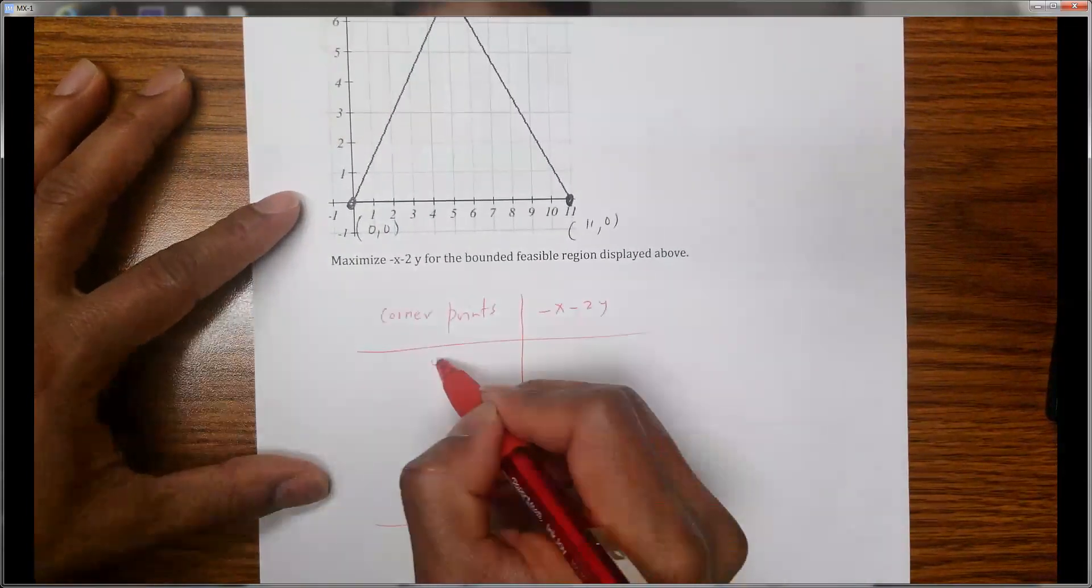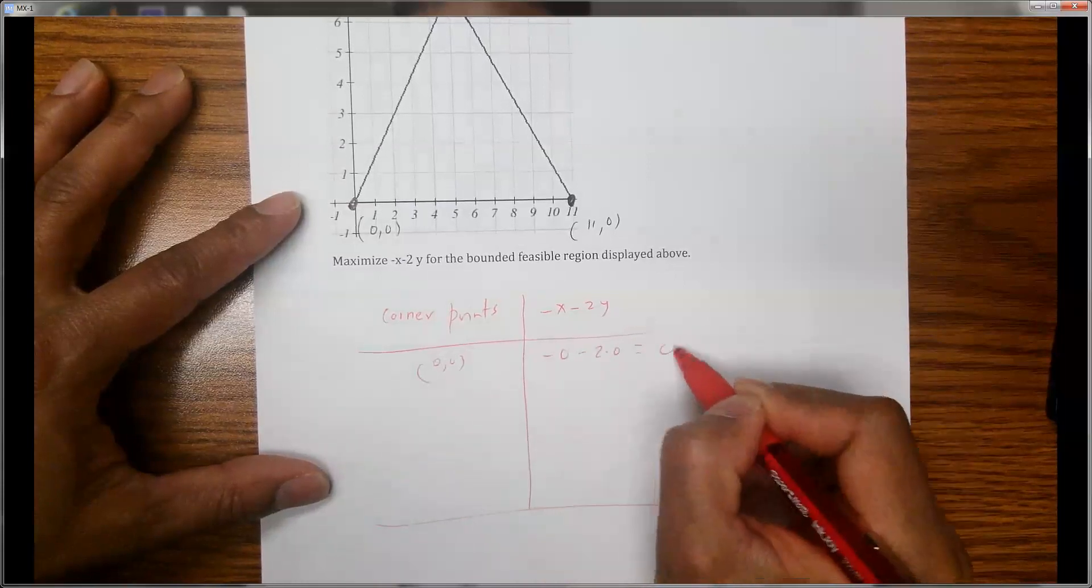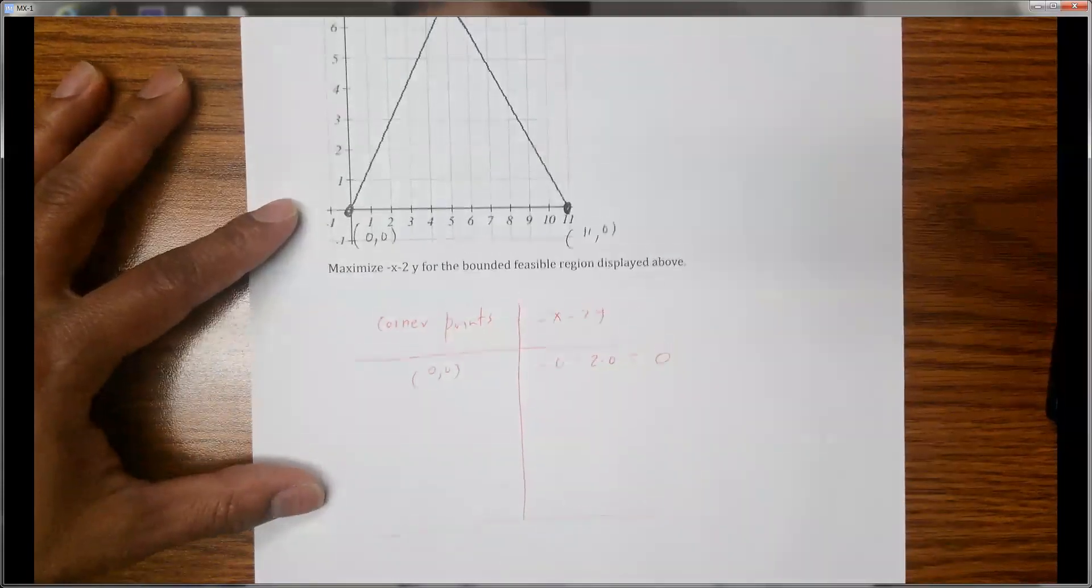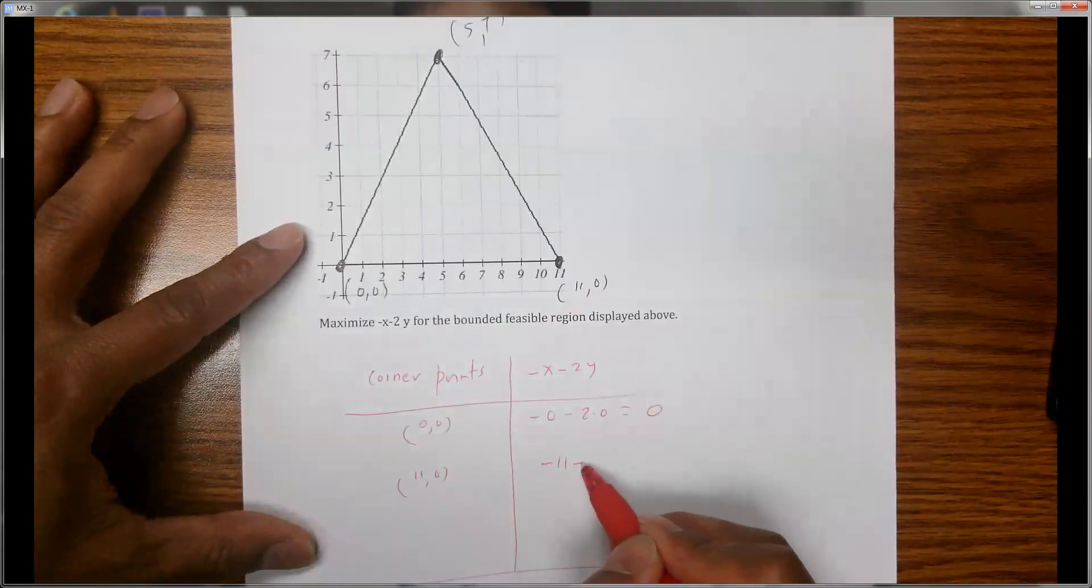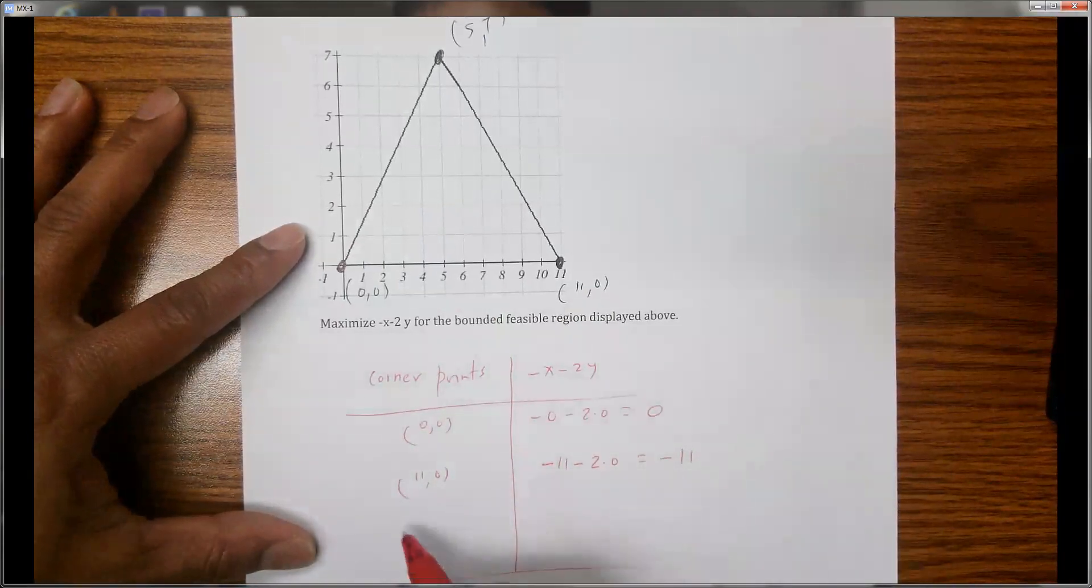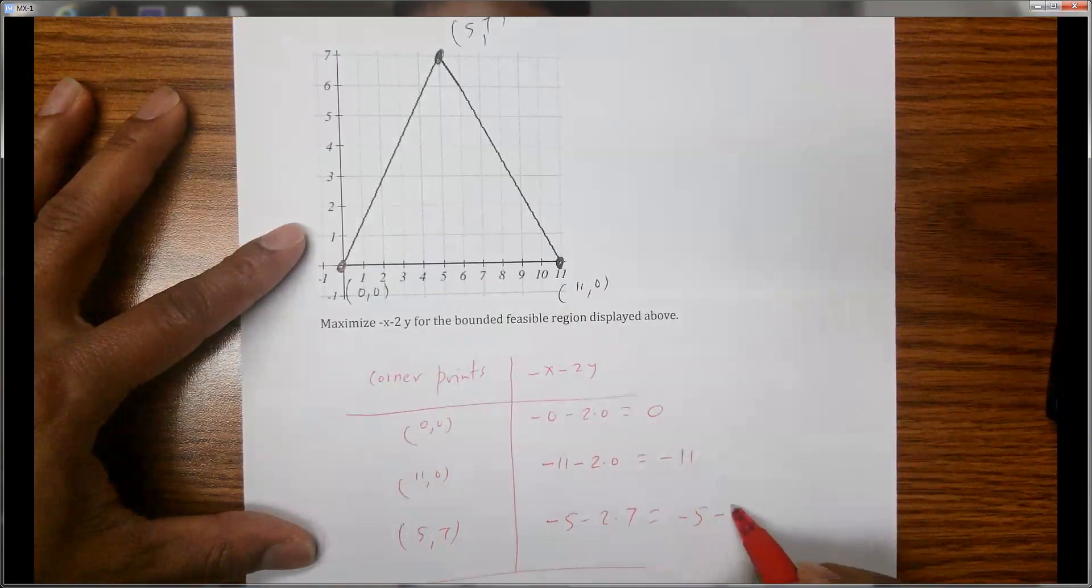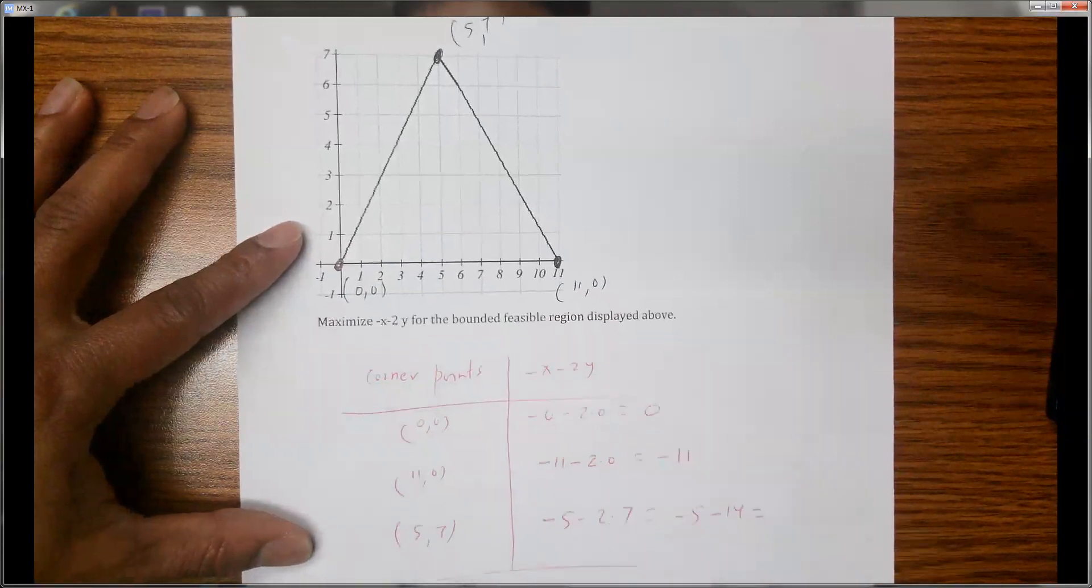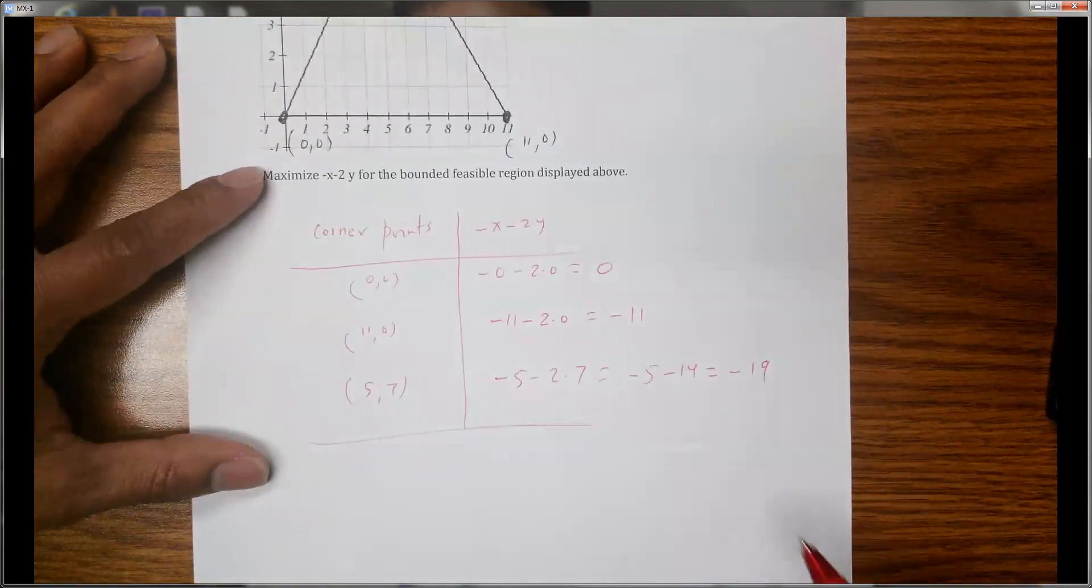At (0,0), if you put 0 for x and 0 for y, it will be 0. At (11,0), meaning 11 for x and 0 for y, it will be -11. Finally at (5,7), so 5 for x and 7 for y, that will be -5 - 14 which is -19.